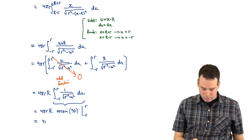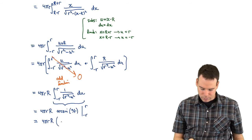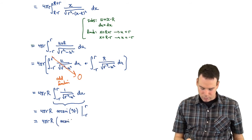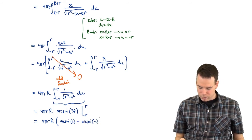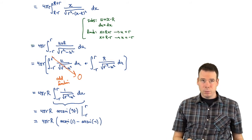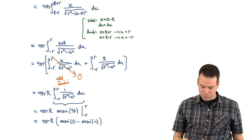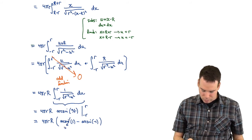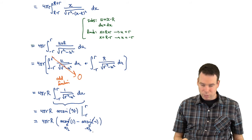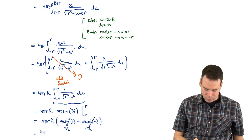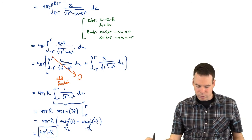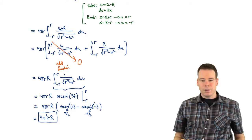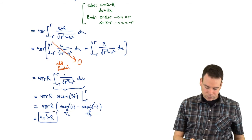And so now I can evaluate at the endpoints. That's arcsin(1) - arcsin(-1). What's arcsin(1)? Sine of what is 1? That's π/2. Sine of what is -1? That's -π/2. So this is π/2 minus -π/2. That's just π. So this becomes 4π²rR. Little r times big R. And there is our result. So that is the surface area of our torus.